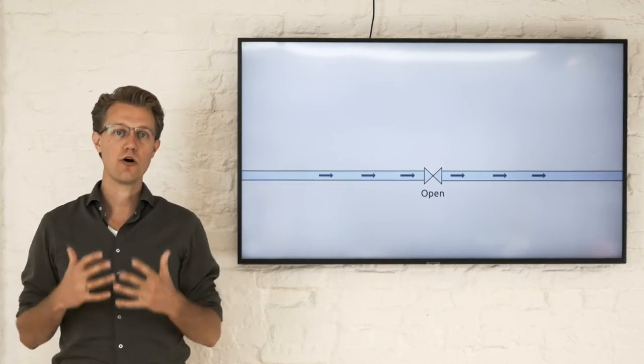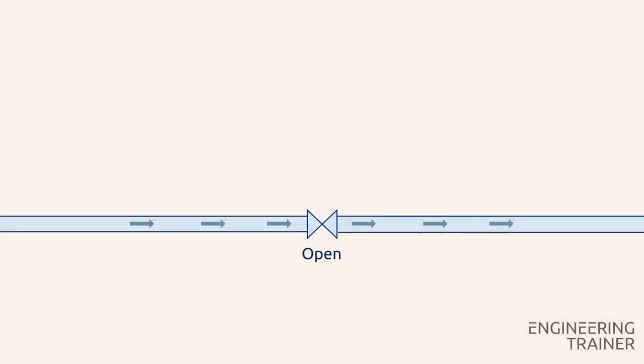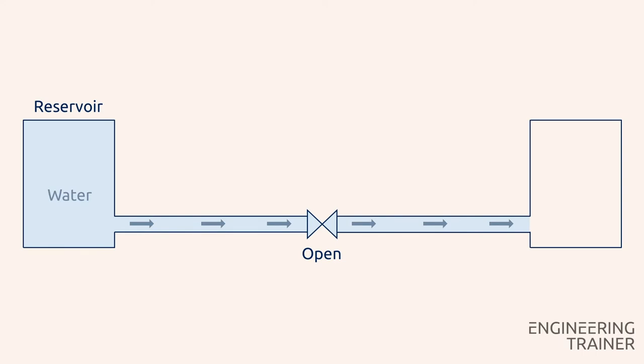Evaluate a pipe section with an open valve through which water is flowing. The pipe is connected to a full reservoir upstream and an empty reservoir downstream, and hence the water flows from the left to the right in this model.